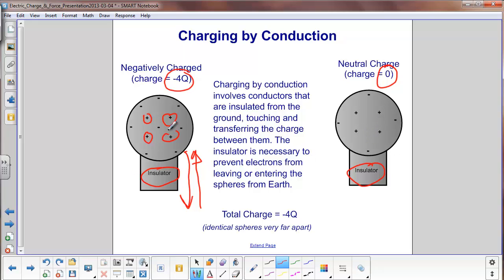So, in this case, you have a negative 4q over on this sphere, 0q here. The total charge between the two spheres is negative 4q.